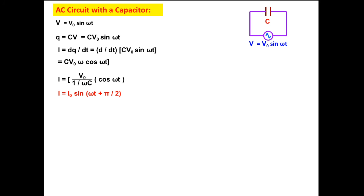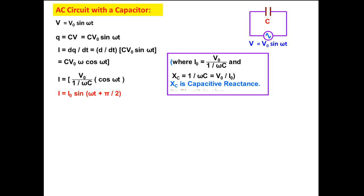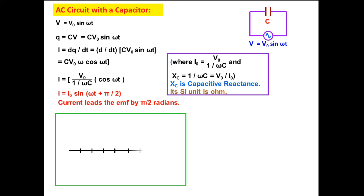Now see, the instantaneous voltage is V₀ sin ωt while instantaneous current is I₀ sin (ωt + π/2). So we can say in capacitive circuit voltage lags behind the current by angle π/2, or current leads the voltage by angle π/2.